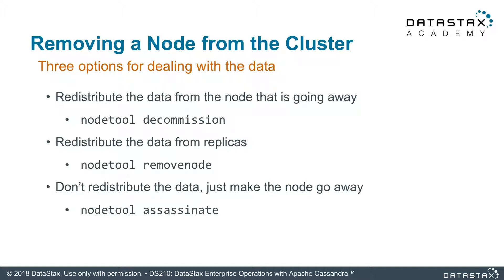When you use the node tool remove node command, it's very similar, but this is a command you run if the node that you want offline is already gone. Let's say you lost a node from a severe hardware failure and you need to remove that node from the cluster topology information. So you go to another running node, run the remove node for the node that's gone, and it will use the replicas to redistribute the data. This is how you do it in an emergency situation. The big difference is: decommission means the node you want to decommission is still online. Remove node means the node is offline — it's gone.